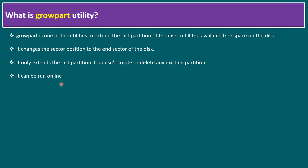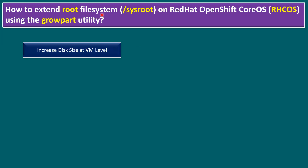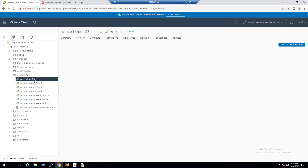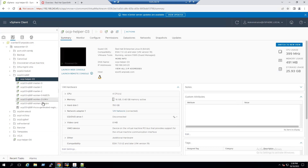Now let's start with the key concept — how to extend the root file system. Our lab environment is running Red Hat OpenShift on VMware vSphere, at the virtual machine level. First, we have to increase the disk size at the VM level. Within our lab, we have a cluster running OpenShift Container Platform with one helper node, three master nodes, and three worker nodes.